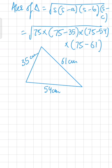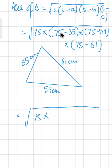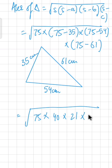Substituting the values: 75 multiplied by (75 minus 35), which is 40, then (75 minus 54), which is 21, and (75 minus 61), which is 14. So we have the square root of 75 × 40 × 21 × 14. To simplify this, we should find the prime factors of all these numbers.